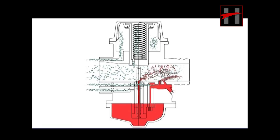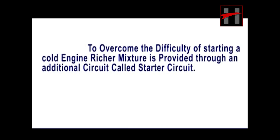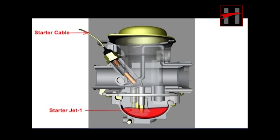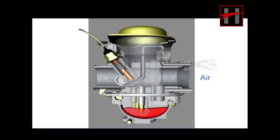To overcome the difficulty of starting a cold engine, a richer mixture is provided through an additional circuit called the starter circuit. The starter system consists of the following parts: starter cable, starter jet 1, starter jet 2, plunger, and spring. When the starter is opened, the starter plunger lifts up from its seat and air enters the starting circuit through the starter air passage.